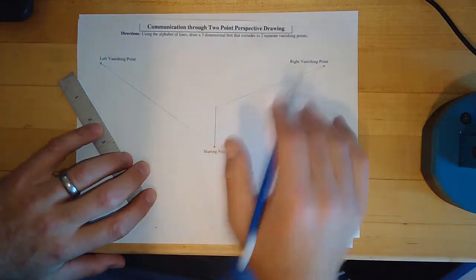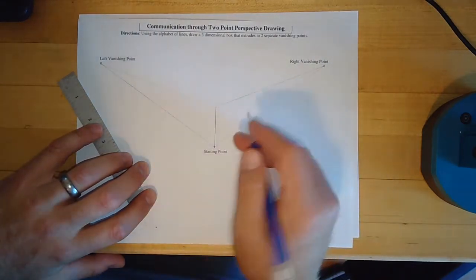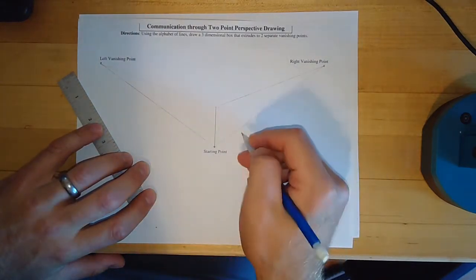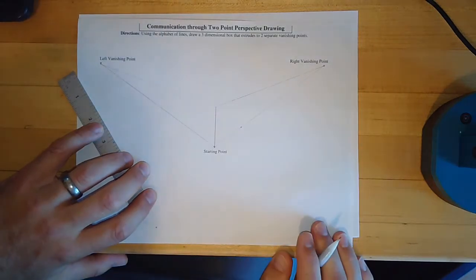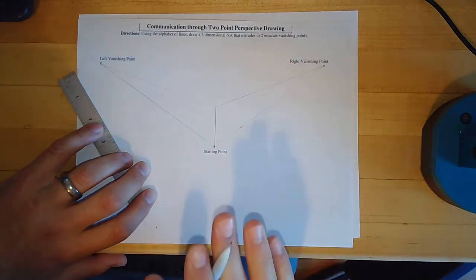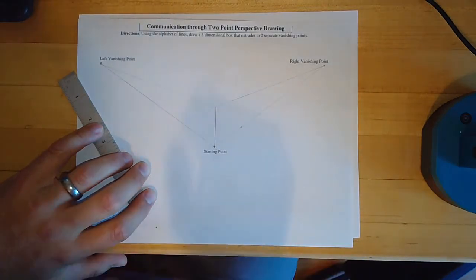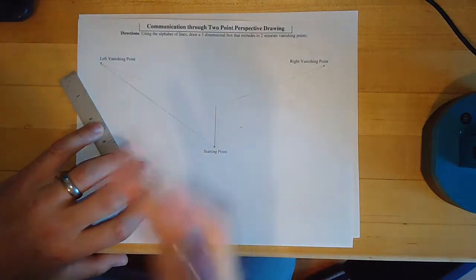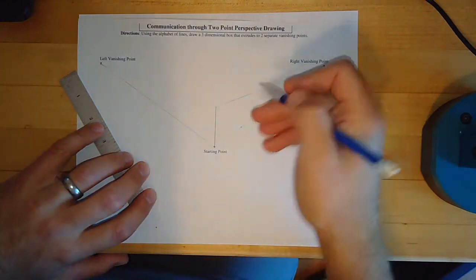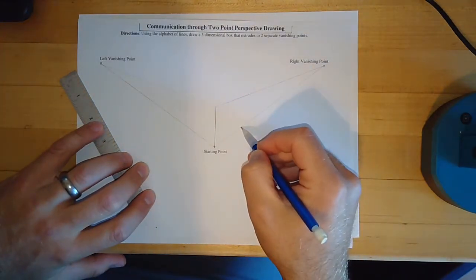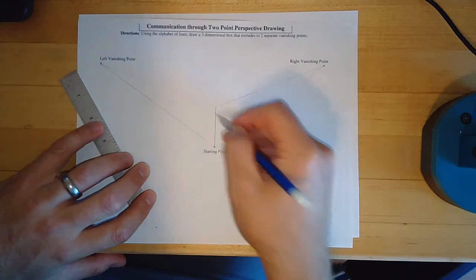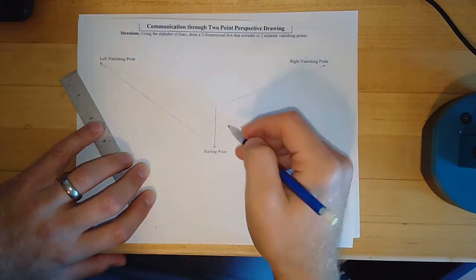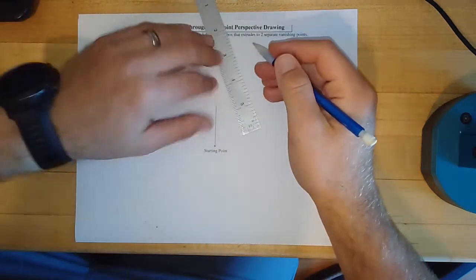The nice thing is I can pick anywhere I want. I'm doing a rectangular prism — I'm going to pick a point right there. There's no rule for this, but once you've made the point, you've got to follow three rules. From this point: depth line to vanishing point, width line to vanishing point, height line — vertical.